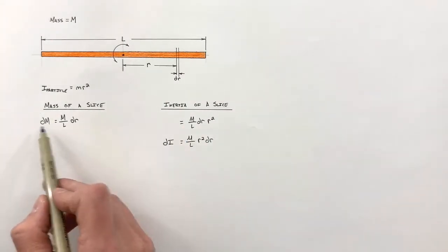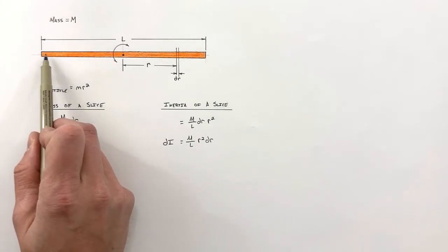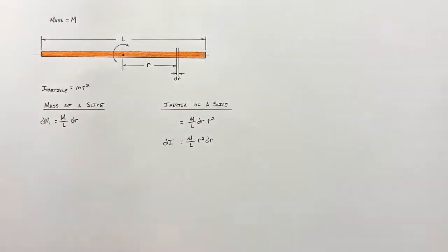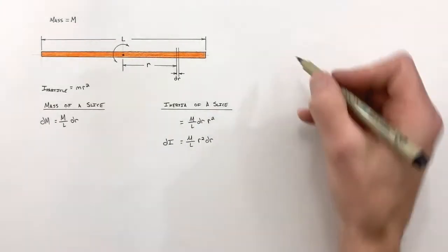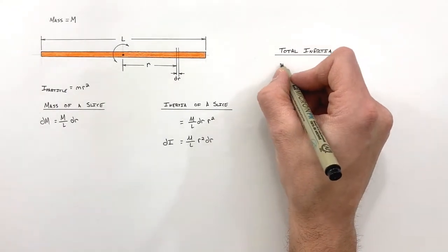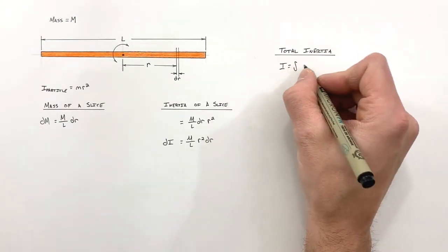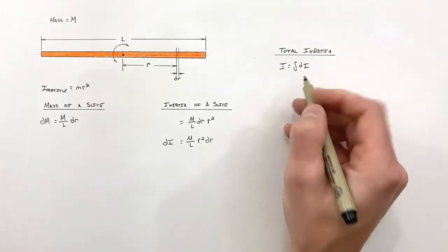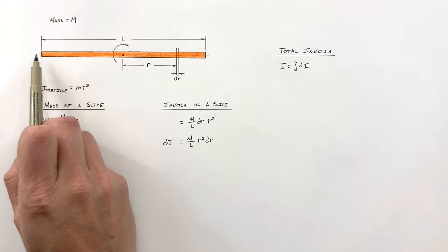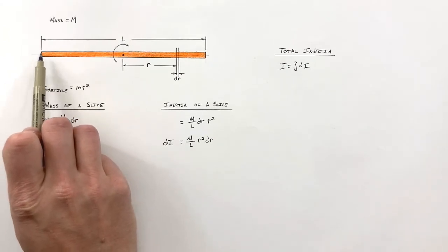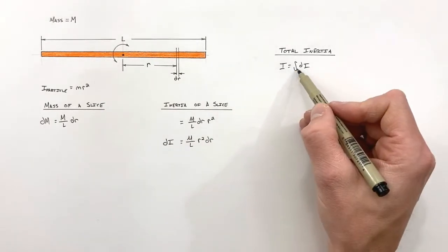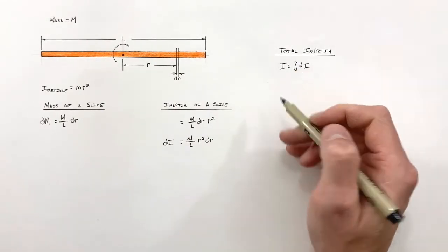Just as with the masses, if we add up all of the inertias of all our slices along the entire rod, we get the total inertia of the rod. The total inertia is the infinite sum of all our little inertias from each individual slice — which is why we use an integral symbol, as we're taking an infinite sum.